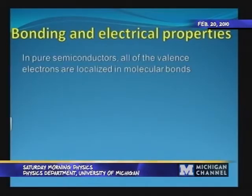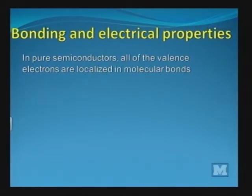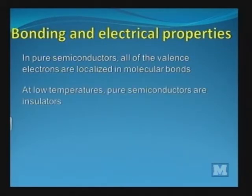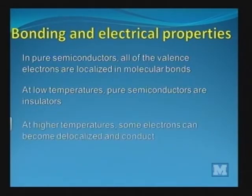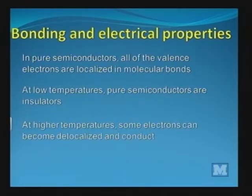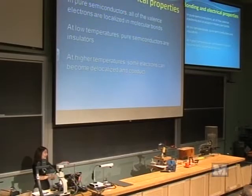What about its electrical properties? In pure semiconductors — all silicon atoms or all germanium atoms — all of the valence electrons are localized in these molecular bonds. At very low temperatures, these materials will act like insulators. However, at some higher finite temperatures, some of these electrons will become delocalized, and then they can conduct. So at low temperatures, they're all in these molecular bonds, but at some finite temperature, some electrons will be excited into what's called the conduction band, and those delocalized electrons are then free to move throughout the crystal.